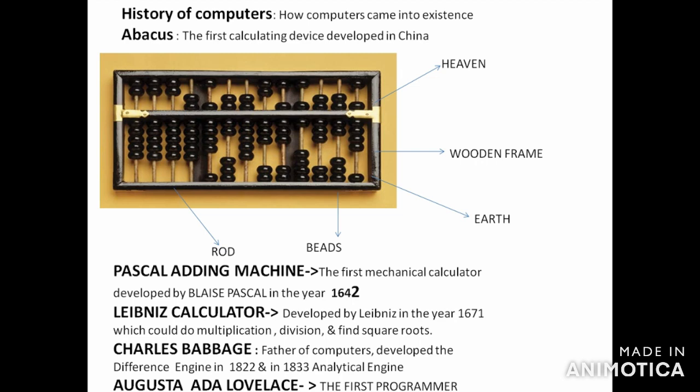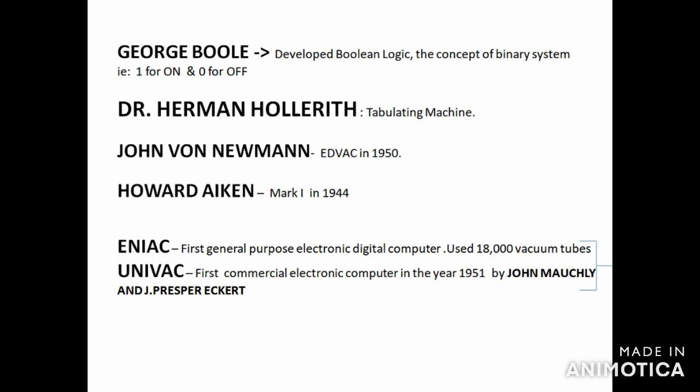George Boole is known for his contribution to the development of Boolean logic. With the help of Boolean logic, he started storing results in the form of one and zero — one stands for a positive answer and zero for a negative answer. We can also say one represents 'on' or high voltage, and zero represents 'off' or no voltage.